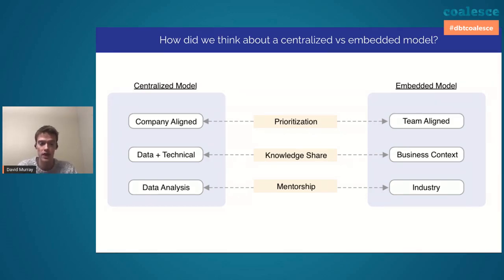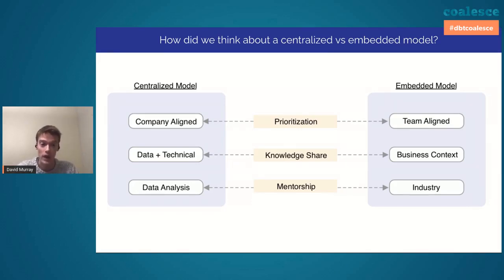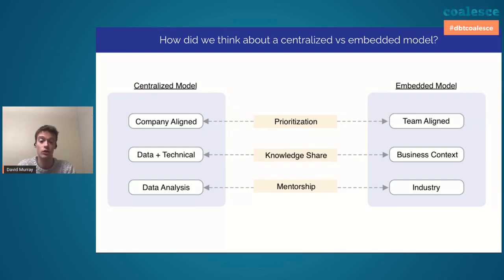When we were thinking about centralized versus embedded and the trade-offs of each model, the first one is really prioritization. When you are a small data team growing like we were, it's super important to be company-aligned. One of the things that alerted us to this issue was when we were in an embedded model and we were busy building out all of the KPIs for all the different teams.